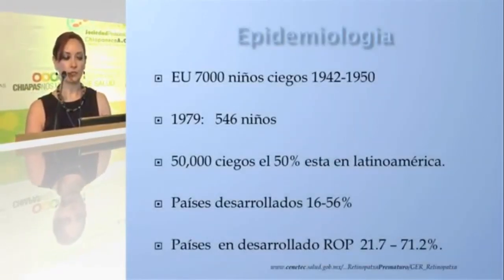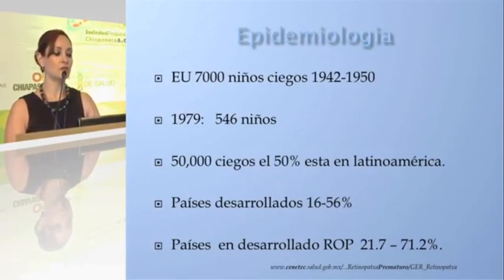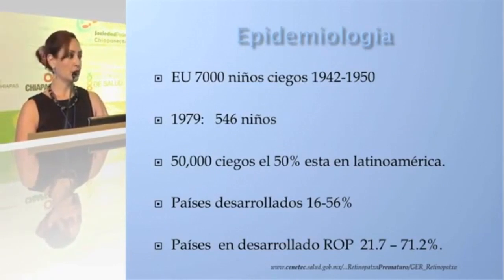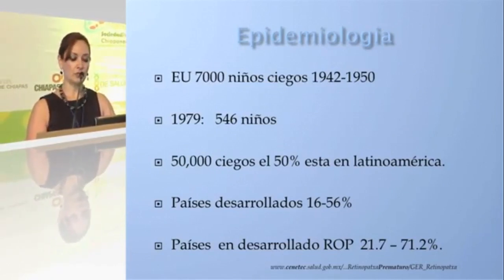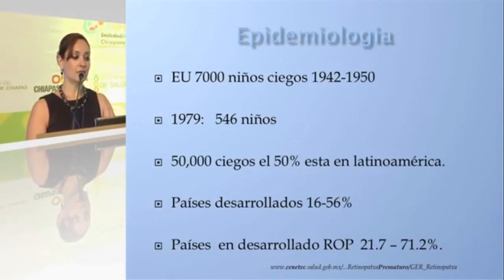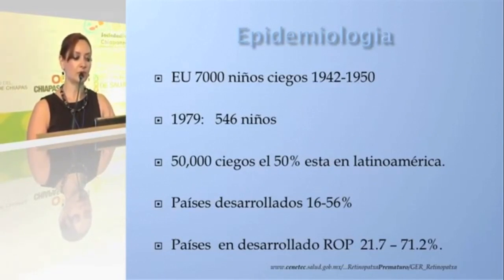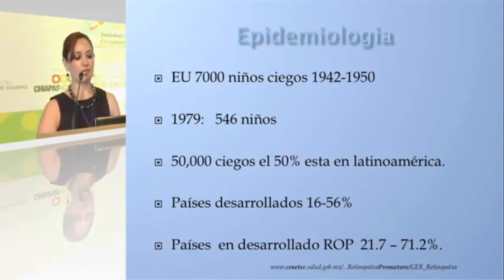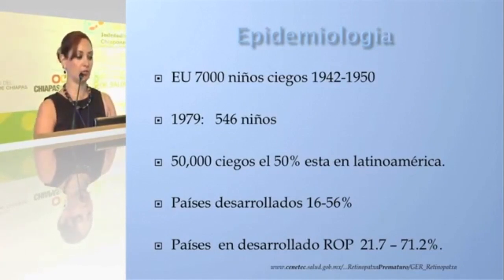Epidemiologically, in the United States there were 7,000 blind children between the years 1942 and 1950. By 1979 there was a decrease to 546 children. Of these 50,000 blind children, 50% are in Latin America; in developing countries the percentage rises to 58%, and in developed countries like the US, the percentage increases up to 71%.